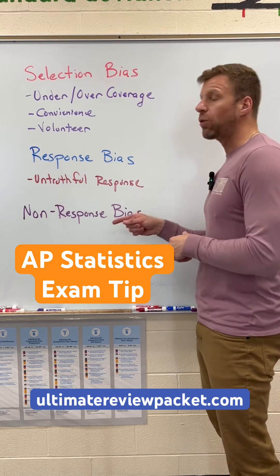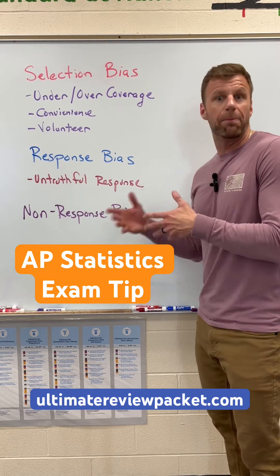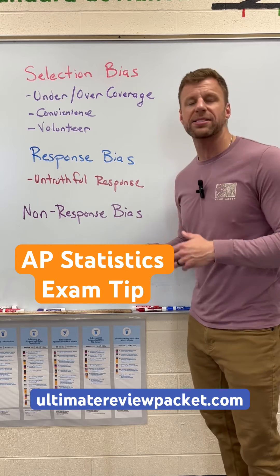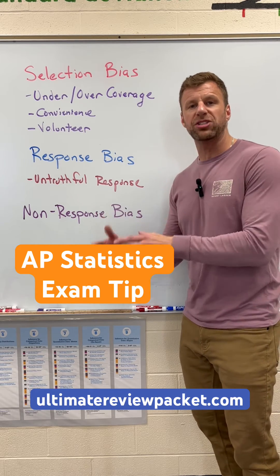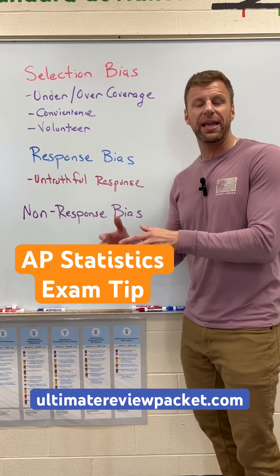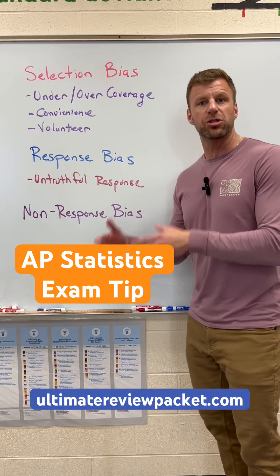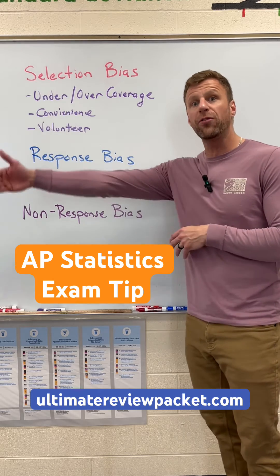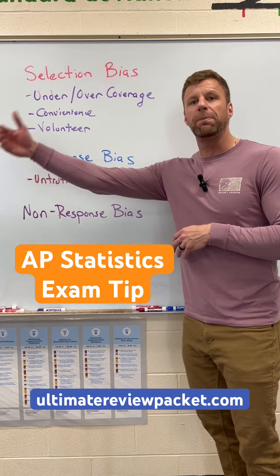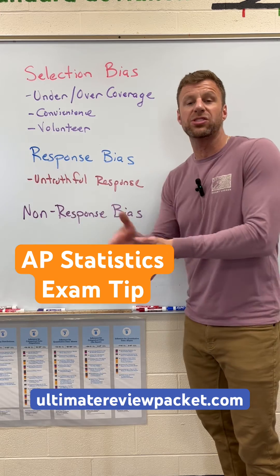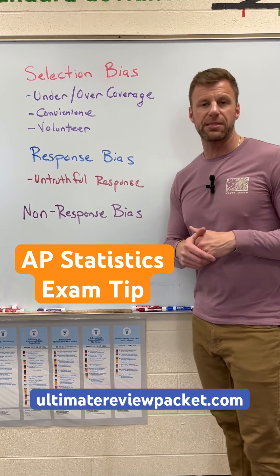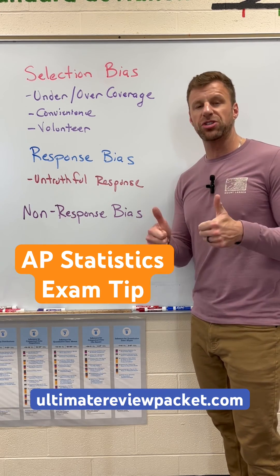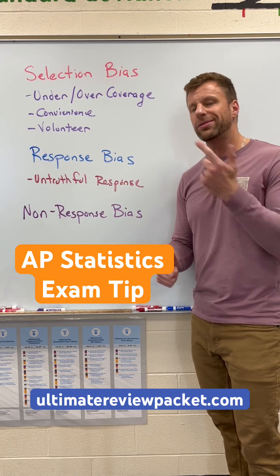Now, it's important that when you're describing a bias that you may see in a problem, you not only describe the bias, but you also talk about the direction it's going to go for your population parameter that you're trying to estimate. Are you going to overestimate that population parameter because of your bias, or are you going to underestimate it? Make sure you know how to do all that when it comes.